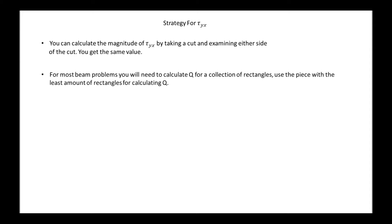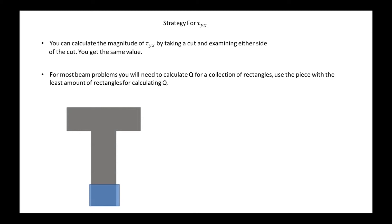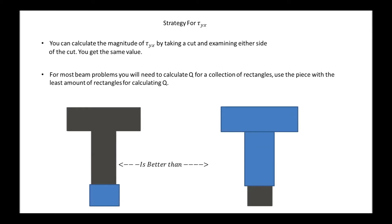For most beam problems, you need to calculate Q for a collection of rectangles, and it's generally easier to use the piece with the least number of rectangles. For instance, when we look below the cut, we only need to find Q for that one area. However, looking above the cut, we have two rectangles to find Q for. So it's much easier to use the area below the cut rather than the areas above.